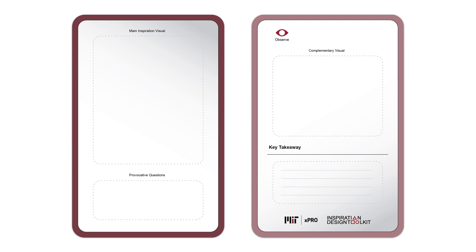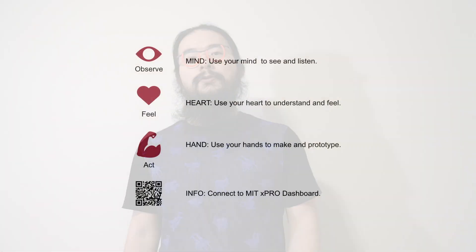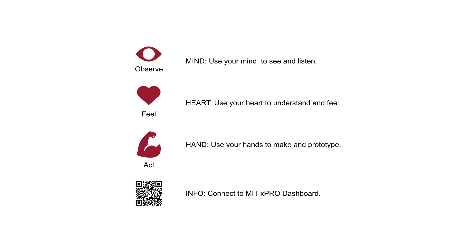Here I want to introduce our tools for learning — we call them reflection icons. The first icon is Observe: use your mind to listen and to see. The second is Feel: use your heart to understand and to feel. The third is Act: use your hand to prototype and make interesting things to validate your learning. The last one is the information icon — a QR code. Once you scan it, you get direct access to your personal MITxPro dashboard for more interesting and relevant materials.